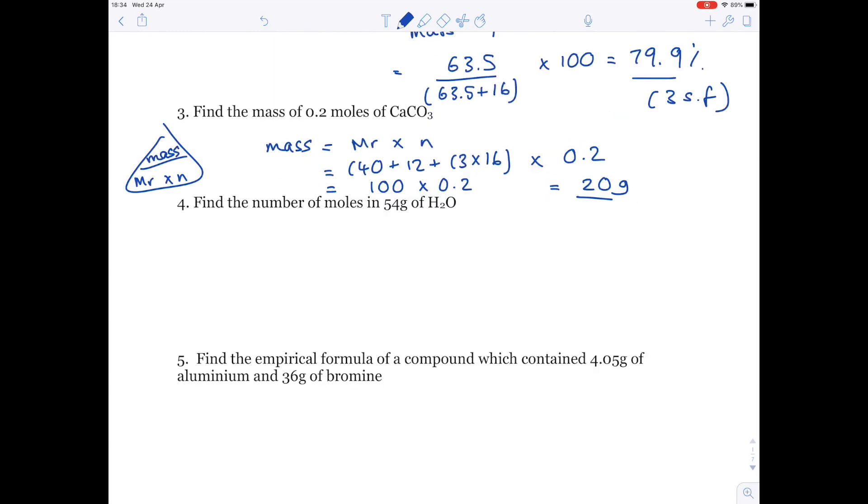Find the number of moles in 54 grams of H2O, so water. According to that formula triangle, number of moles is mass divided by MR. We have a mass of 54 grams given in the question. The MR of water is 18. 54 divided by 18 is 3.